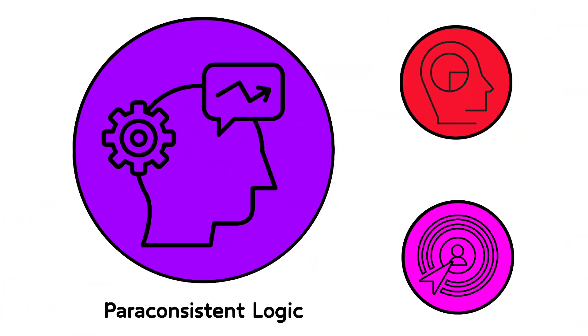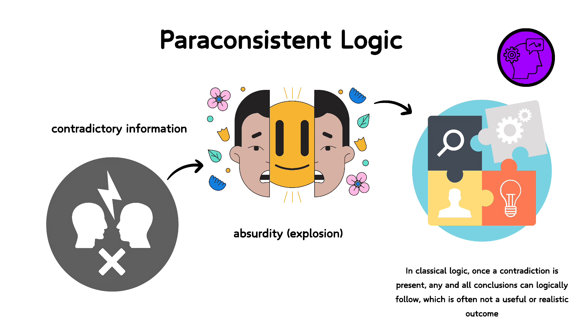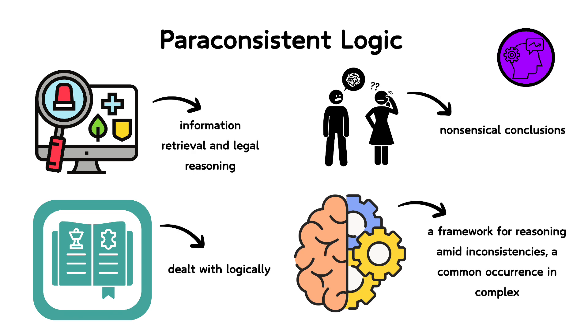Paraconsistent logic allows for the handling of contradictory information without descending into absurdity, explosion, where everything becomes provable. In classical logic, once a contradiction is present, any and all conclusions can logically follow, which is often not a useful or realistic outcome. Paraconsistent logic is crucial in domains like information retrieval and legal reasoning where conflicting information may coexist and need to be dealt with logically without leading to nonsensical conclusions. It provides a framework for reasoning amid inconsistencies, a common occurrence in complex real-world data sets.